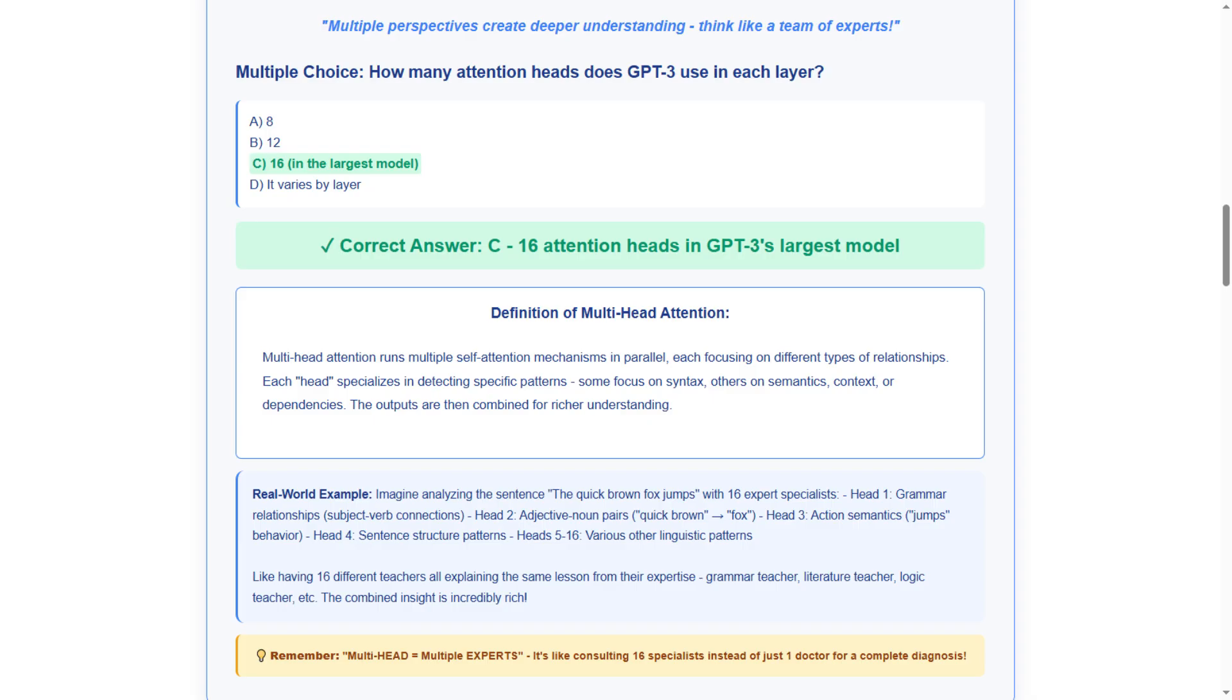Option A, 8. Option B, 12. Option C, 16 in the largest model. Option D, it varies by layer.